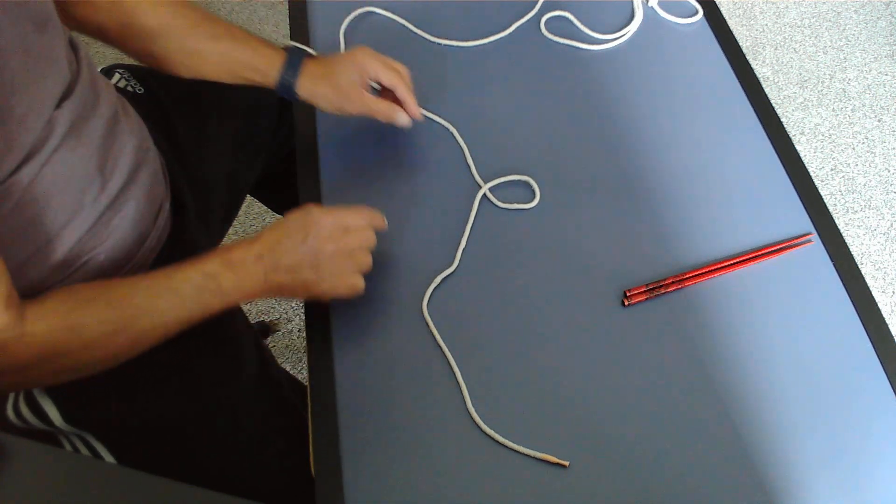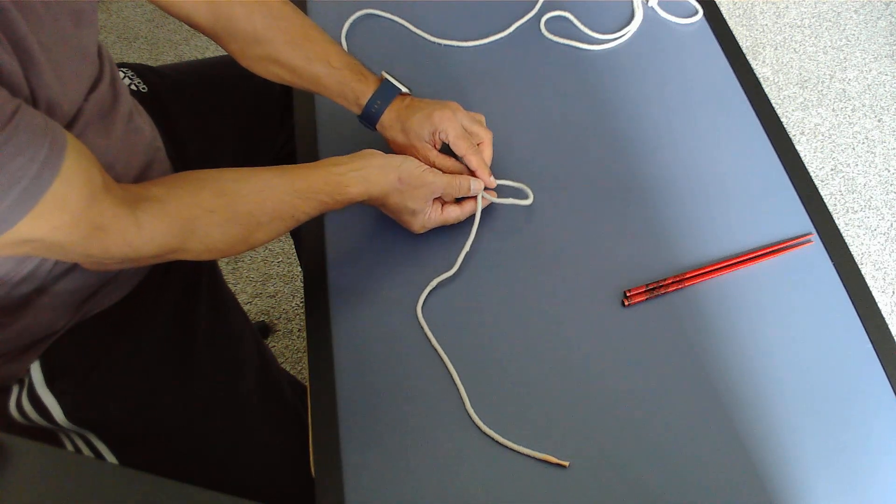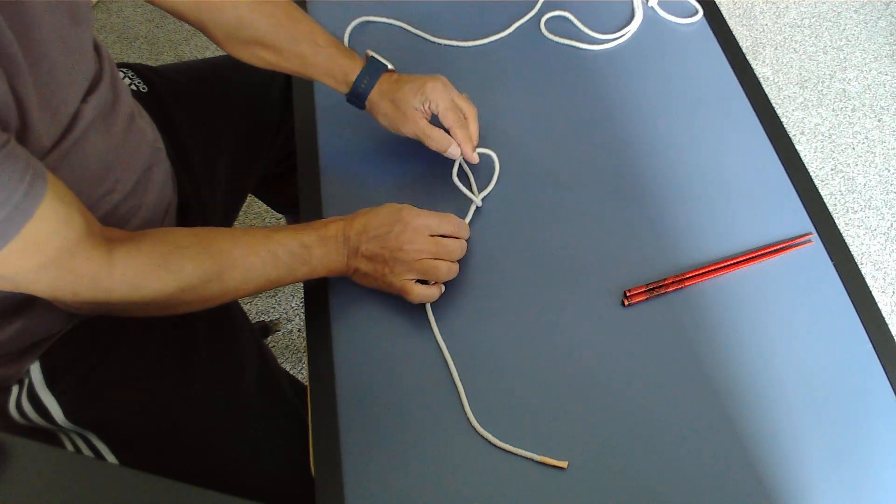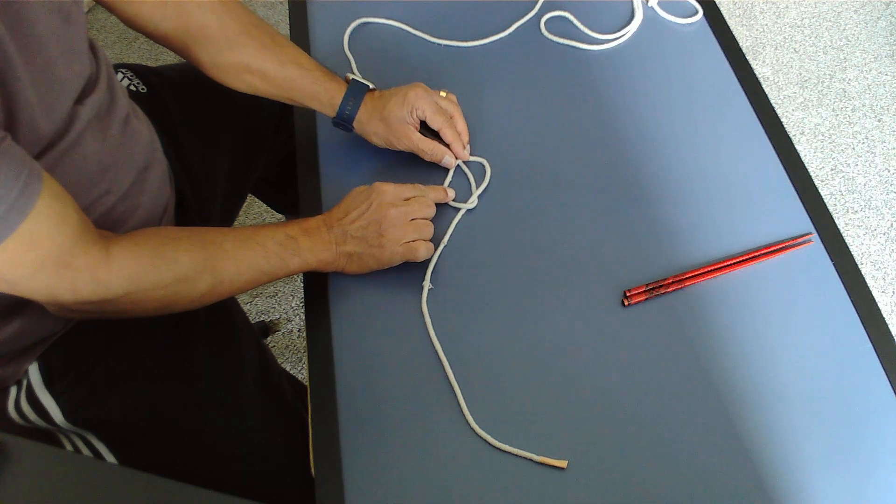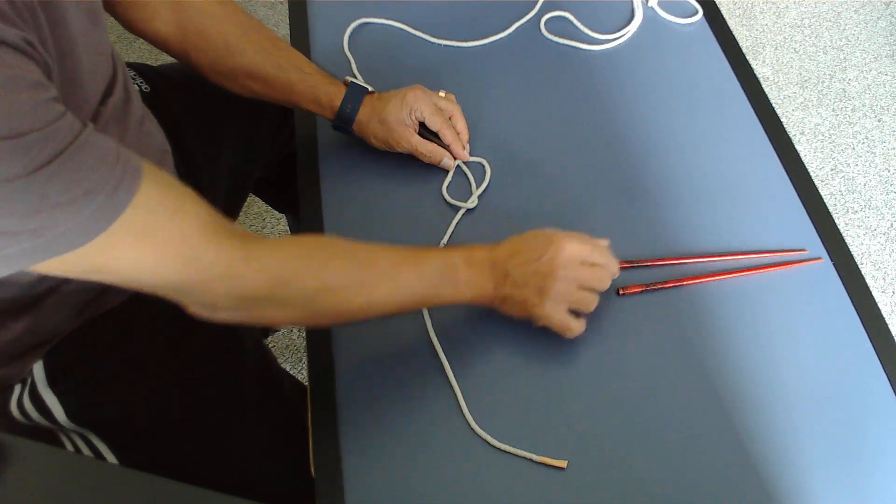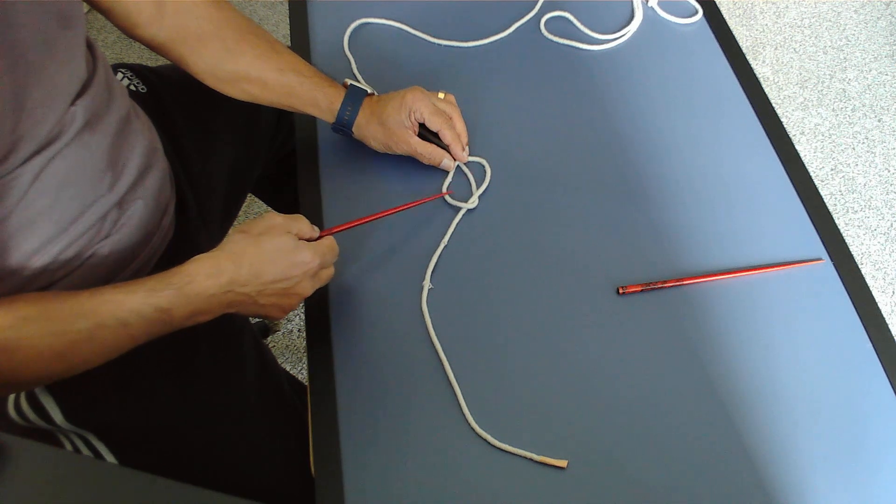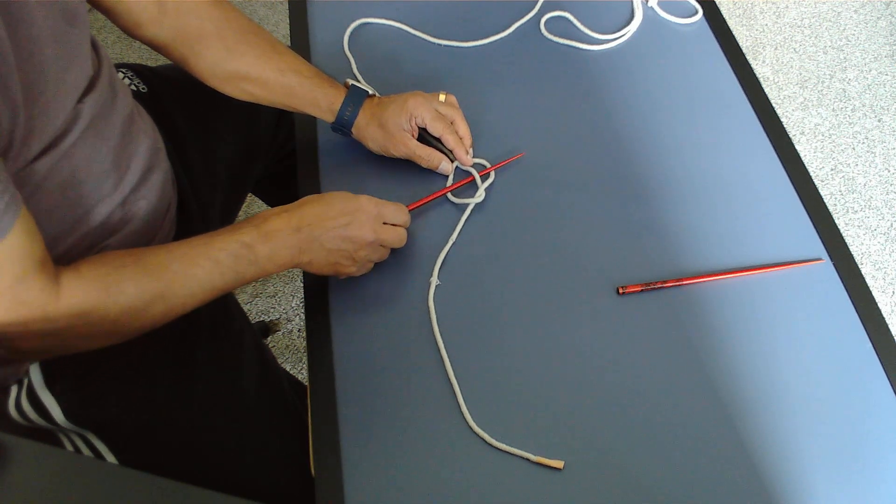Now we have a small loop, then I lift this loop, hold it from down and then come down this way. Come down that way. So I have my marlin spike and then I use this end and then pass it through the other end.